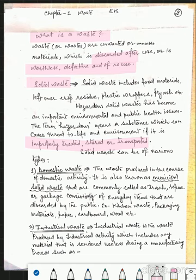Solid waste can be of various types. Now in this section, we will discuss the different categories of solid waste. First category is of domestic waste. The waste produced in the course of domestic activity.